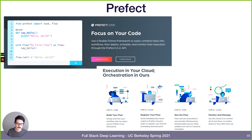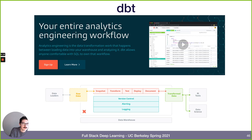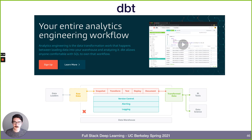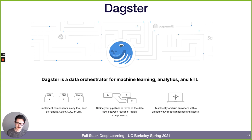DBT (data build tool) enables analytics engineering using SQL instead of Python for processing pipelines - a nice solution for data scientists and engineers comfortable with SQL. Dagster is another data orchestrator that's quite popular nowadays, works with a lot of tools, and lets you test locally and run anywhere.